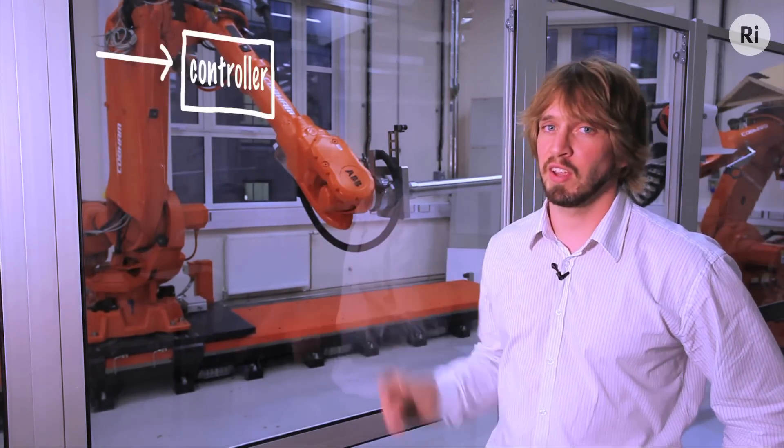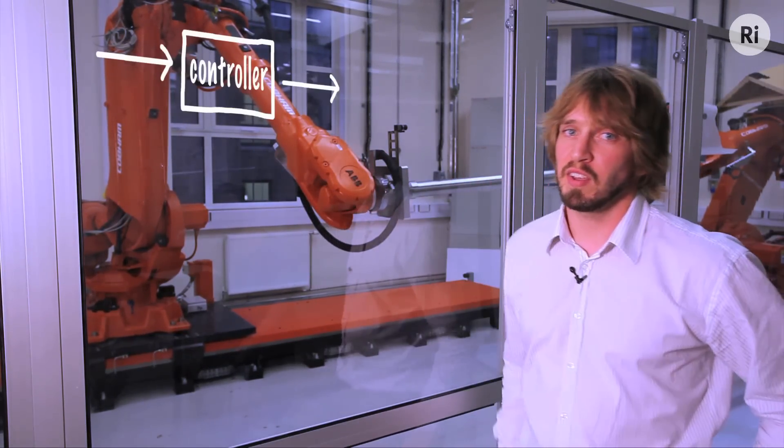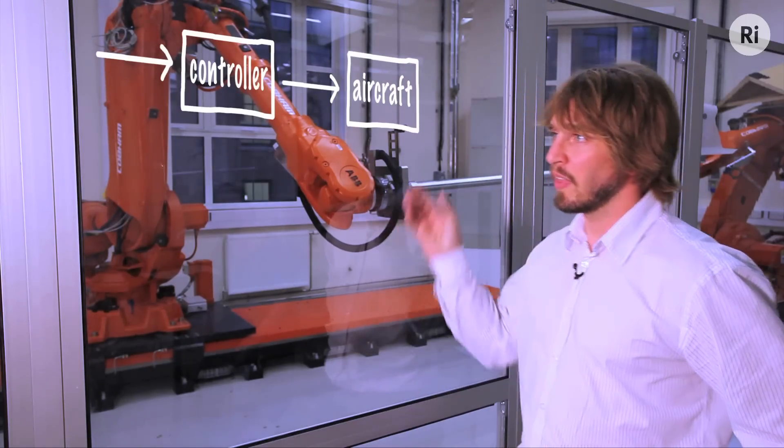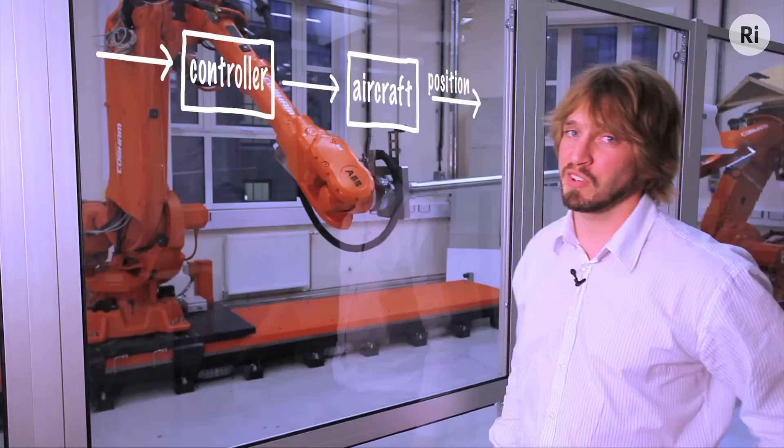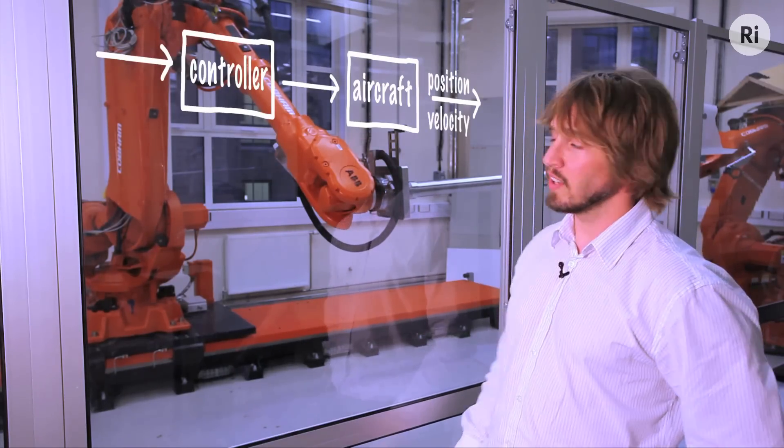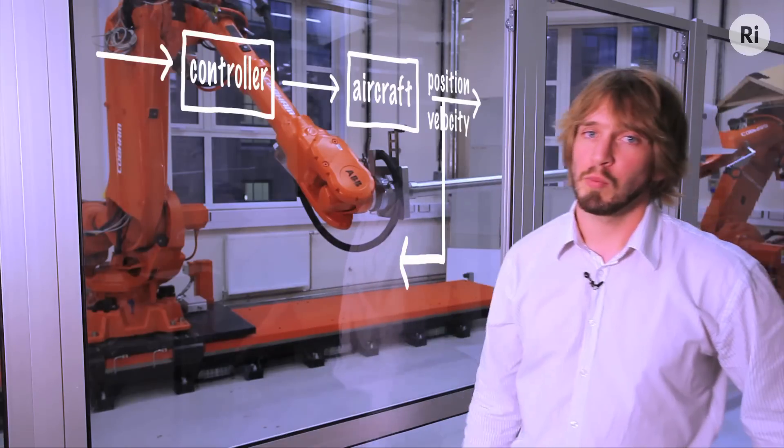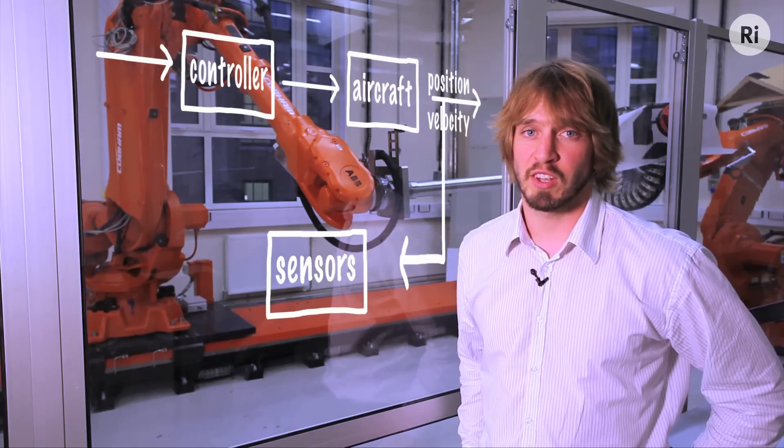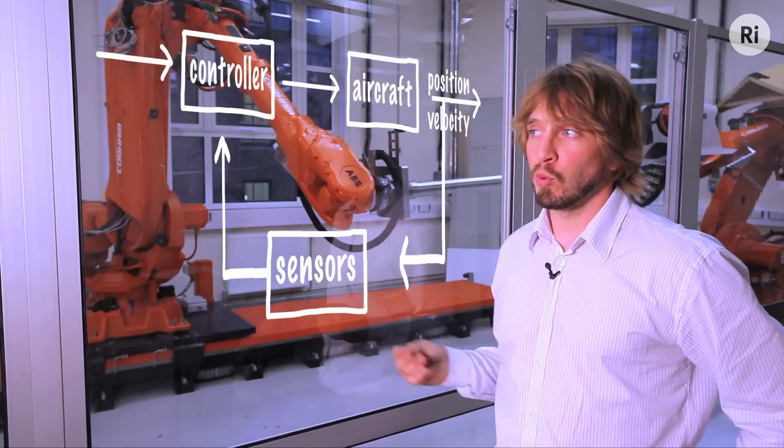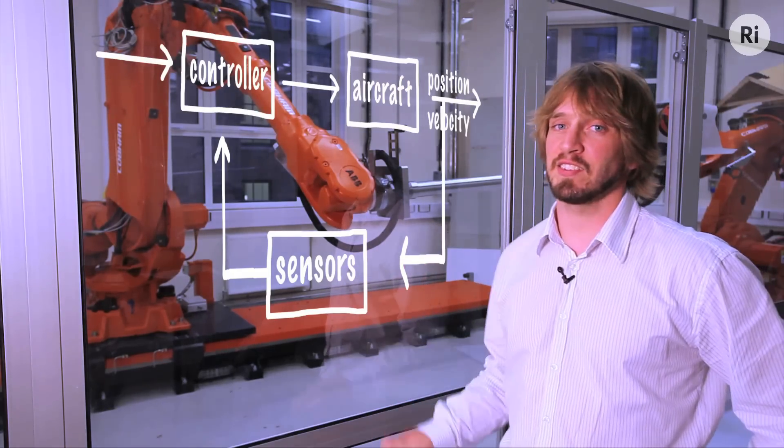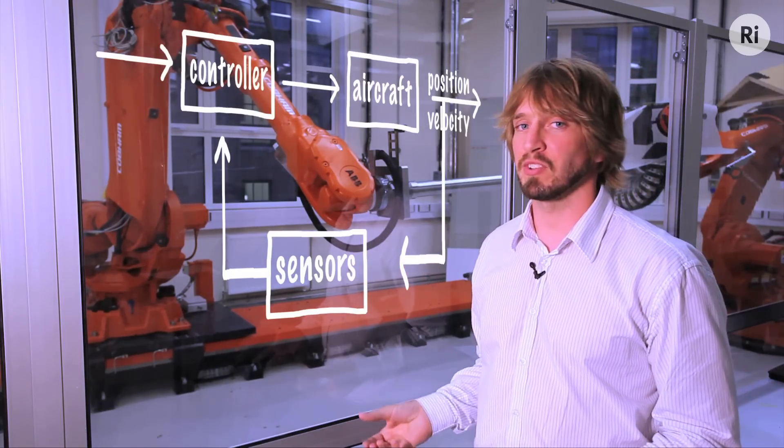Let's have a look at what we just saw. We had an input going into a controller. The controller determined the fan speed for the helicopter and then the outputs from that system for the position and velocity. So that's a simple open loop system. What we then did was we closed the loop by measuring the position with sensors and feeding that back into the controller. What you saw was the effect if we had a delay in the sensors, the aircraft became unstable.